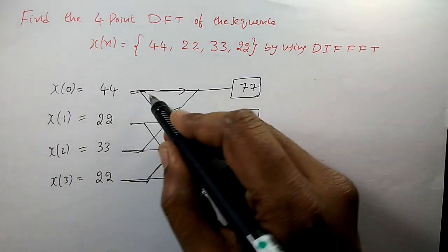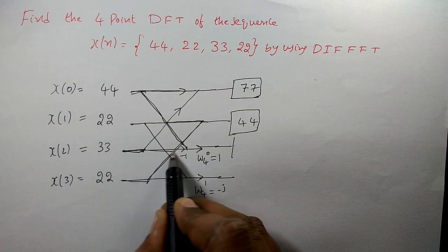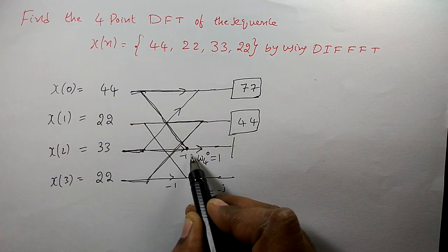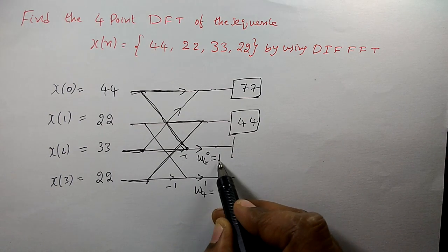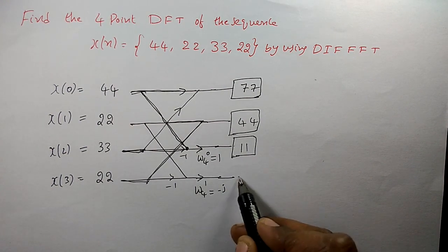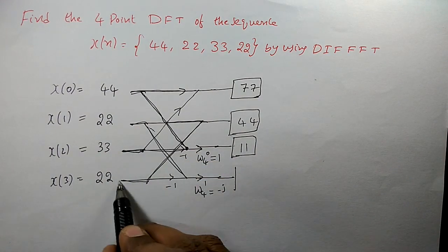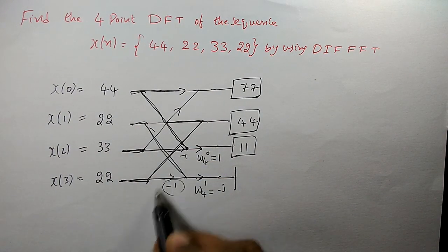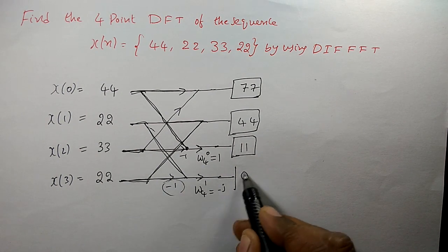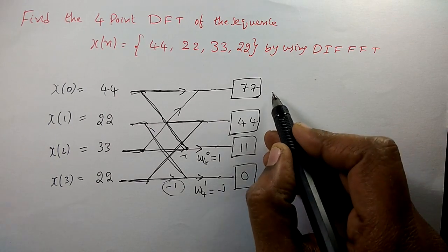For the lower branches of the first stage: the signal 44 minus 33 equals 11, multiplied by 1, so the output is 11. And 22 minus 22 is 0, multiplied by the twiddle factor gives 0. These are the first stage outputs in decimation in frequency.